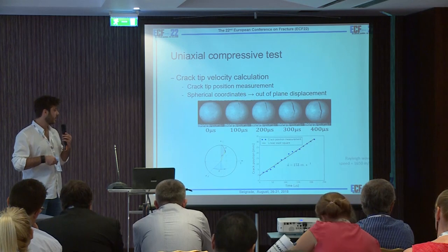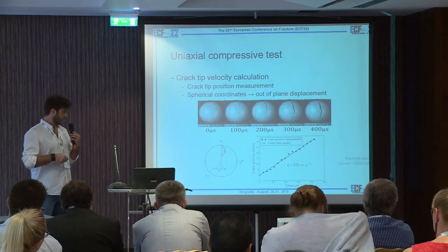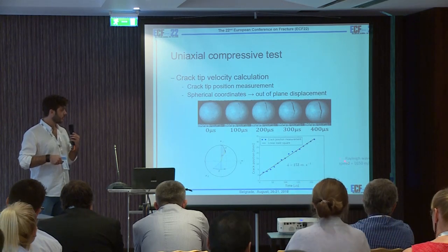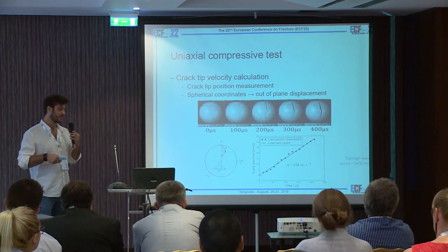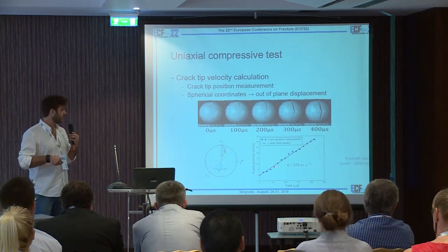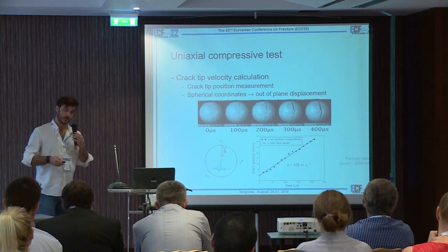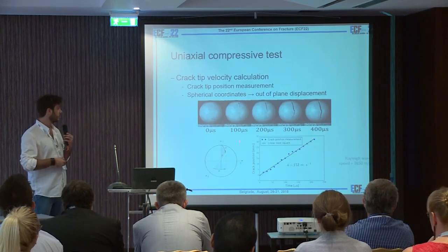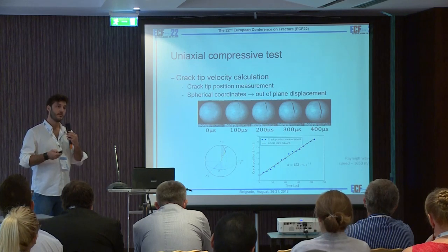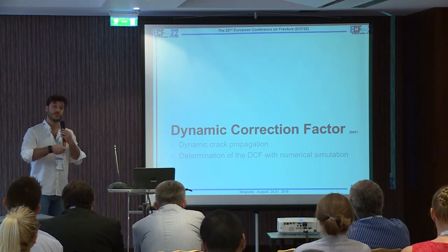For this test, for example, we have a crack velocity of 153 meters per second. For your information, we also measured the Rayleigh wave speed of the material, which is about more than 1600 meters per second. So the ratio of the crack velocity divided by the Rayleigh wave speed is about 0.1. Now that we have measured the crack velocity and the G value, we are trying to evaluate the dynamic correction factor of this test.